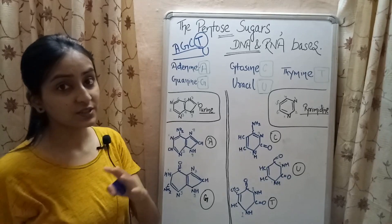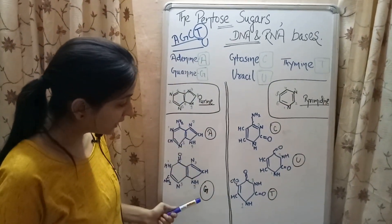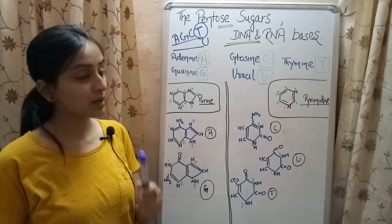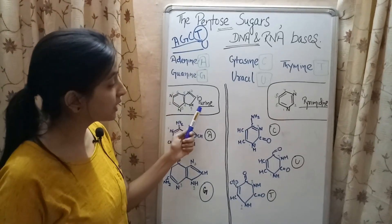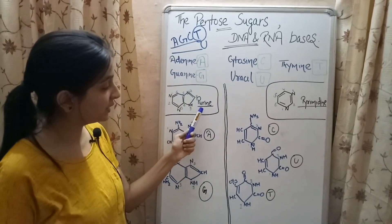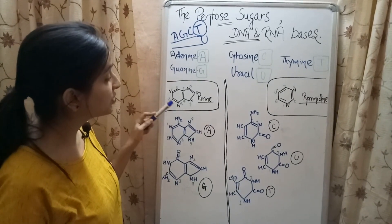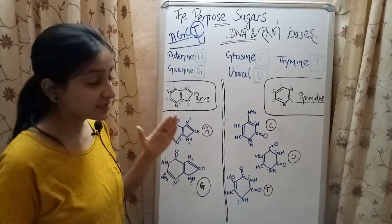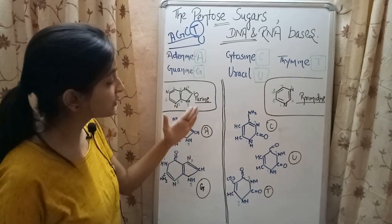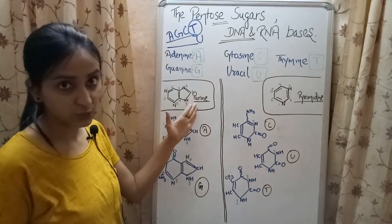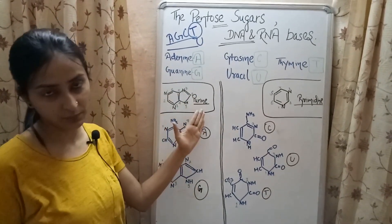Now let's have a look at the structures of these 5 nucleobases. Adenine and guanine have a 9-membered fused ring structure similar to that of a compound called purine, in which nitrogen is present at the 1st, 3rd, 7th, and 9th positions. Since the structure of adenine and guanine resembles that of purines, adenine and guanine are known as purine bases.